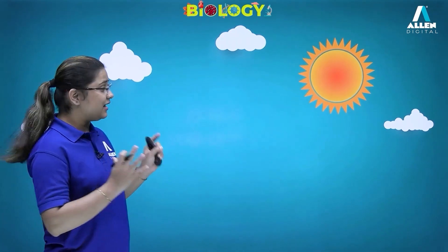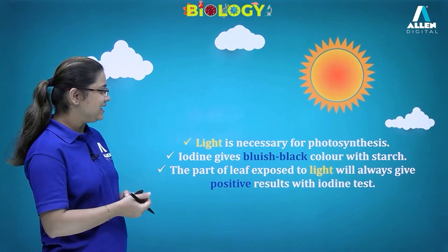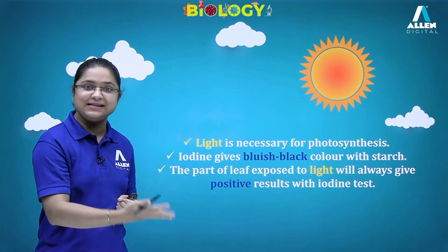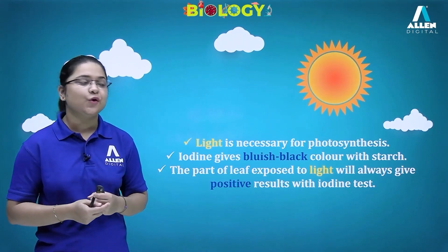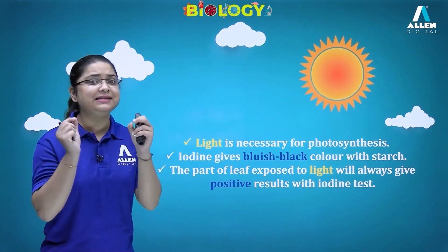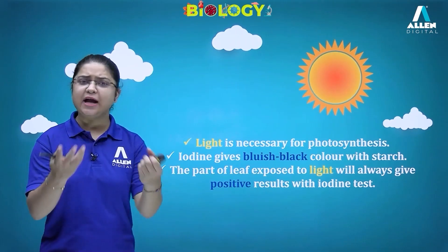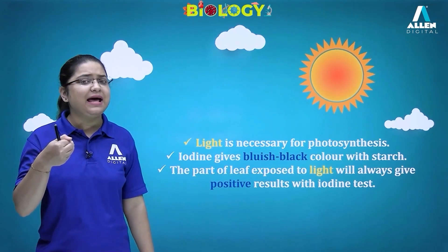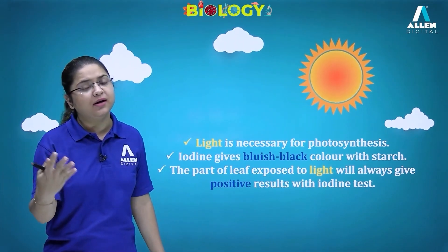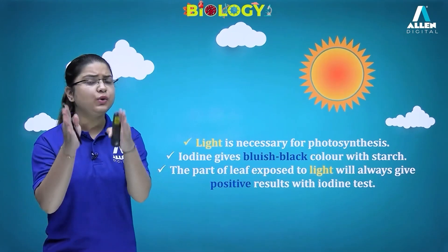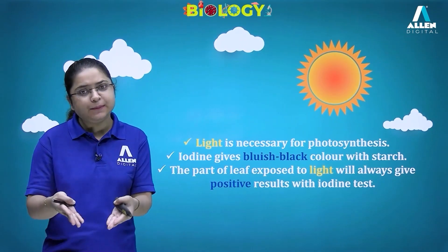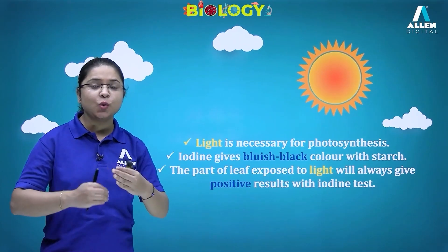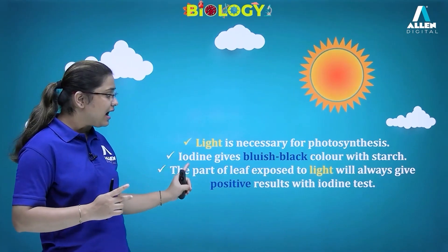Light is necessary for photosynthesis. There is an important test called the starch test, in which iodine solution is used. Iodine gives a bluish-black color with starch. Since glucose is prepared in photosynthesis and is further stored as starch in the plant, if we find starch deposition, we know photosynthesis has taken place. Glucose is converted to starch.